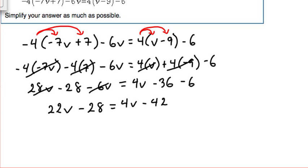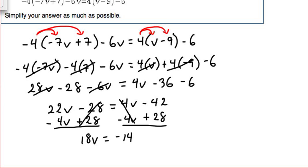So in order to do that, what I'm going to do is subtract 4v from both sides and simultaneously we're going to add 28 to both sides of the equation. Now these 28 become a zero, negative 28 and positive 28. 22v minus 4v is positive 18v. These 4v's cancel each other out. Negative 42 and positive 28 is a negative 14.